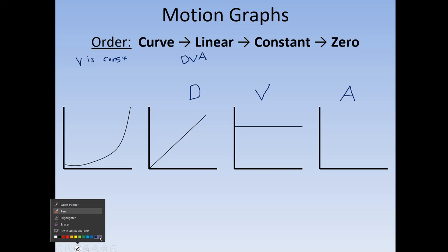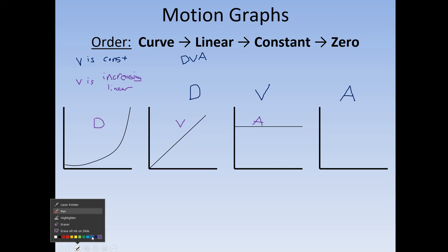Now let's say they tell us the velocity is increasing and linear. Write out curved, linear, constant, zero. Velocity is linear, so displacement goes one step to the left — it's curved — and acceleration is one step to the right — it's constant. You could also do this if velocity is zero: displacement would be constant, and there would be nothing to the right for acceleration.